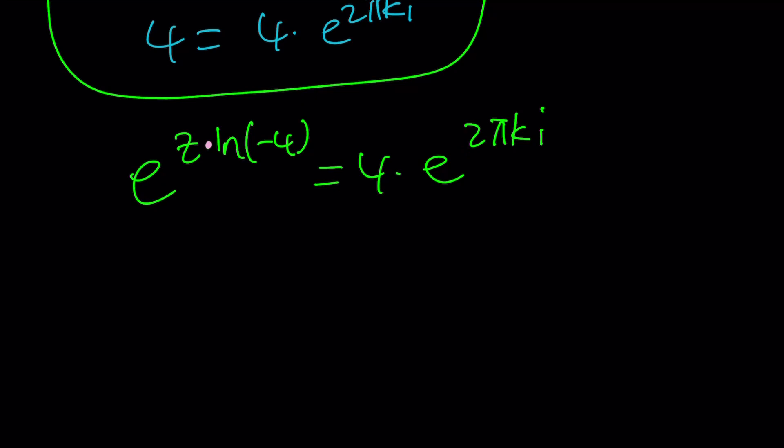And now, here's what we're going to do. We're going to ln both sides, and when we do the natural log on both sides, we're going to go ahead and this is going to be z ln of negative 4. And when we do ln here, it's going to be the ln of a product.